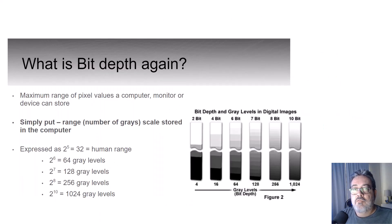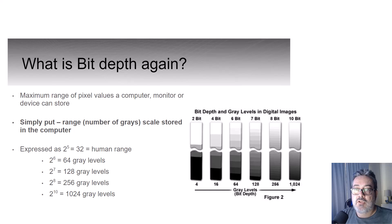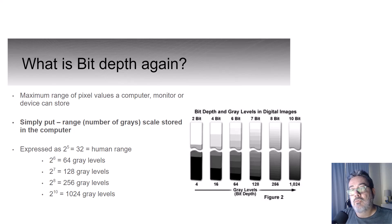For a brief review of bit depth, this is the maximum range of pixel values that the computer can store, or the number of shades of gray possible. This does not include software. The human range is 5-bit, meaning 2 to the 5th power, or 32 shades, which is very narrow compared to what a system can demonstrate.